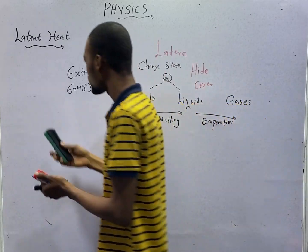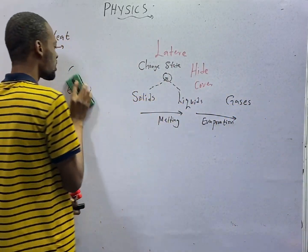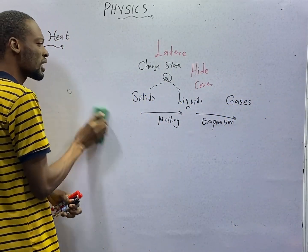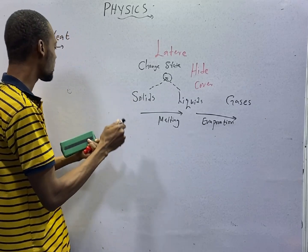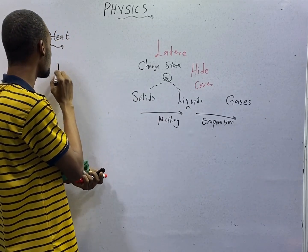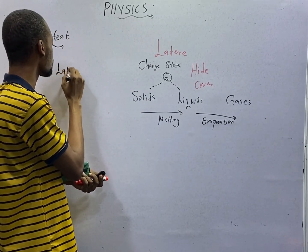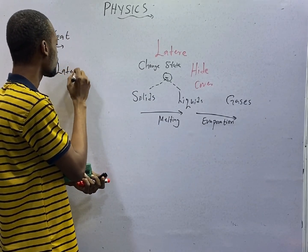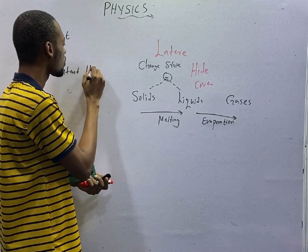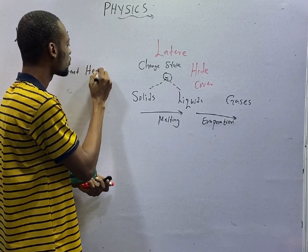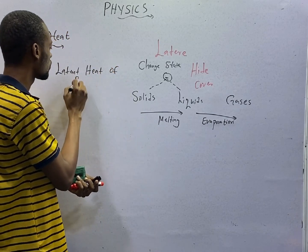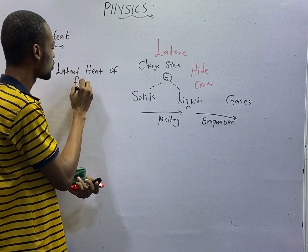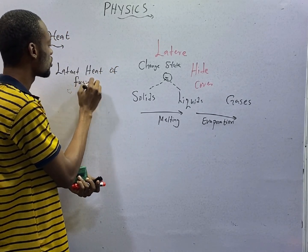We have two major types of latent heat that you should look at. One is latent heat of fusion.